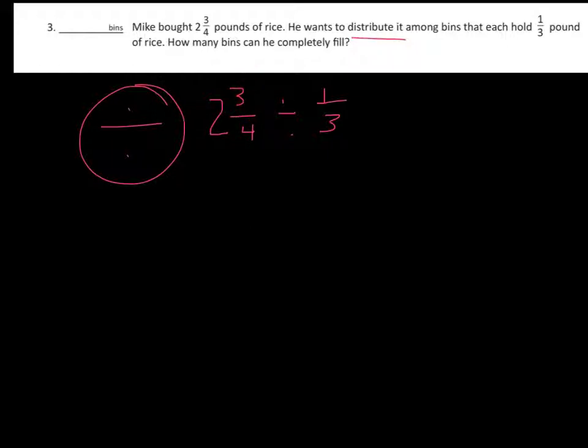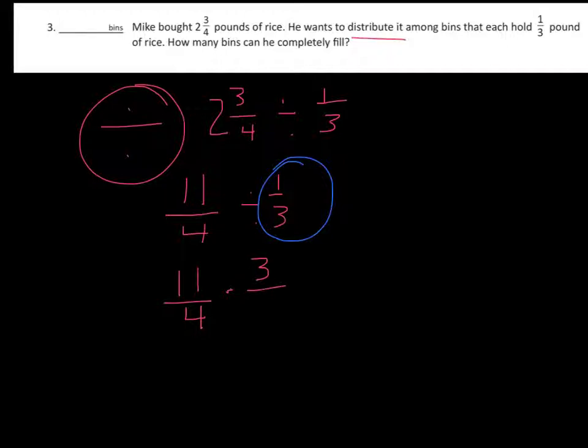So what we have then is four times two is eight, plus three is eleven fourths, divided by one third. Now when we multiply or divide fractions, we basically take the second number here and turn it upside down and multiply it. So what we're going to do is take eleven fourths times three over one. Then we multiply the numerators, three times eleven is thirty three. We multiply the denominators, four times one is four.